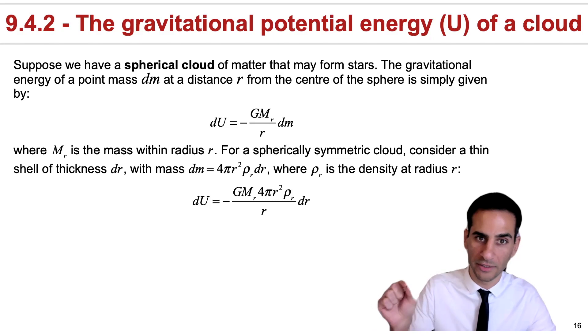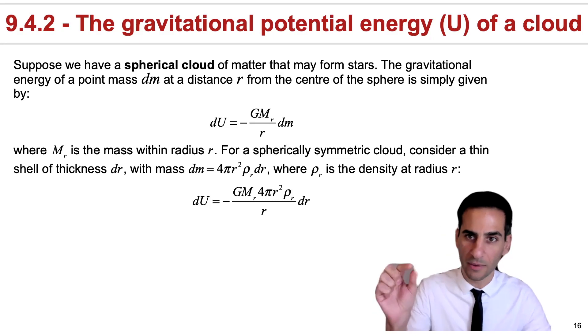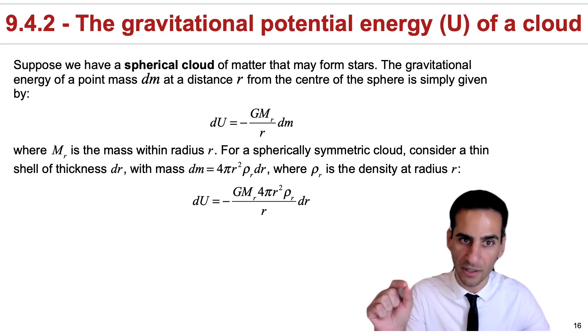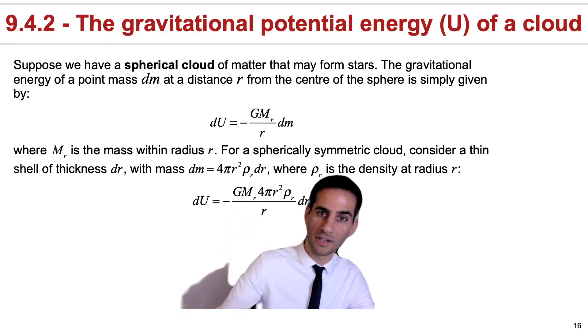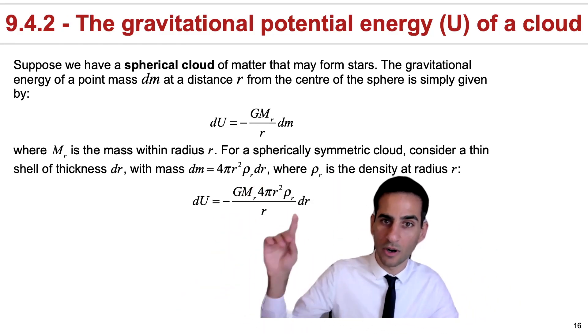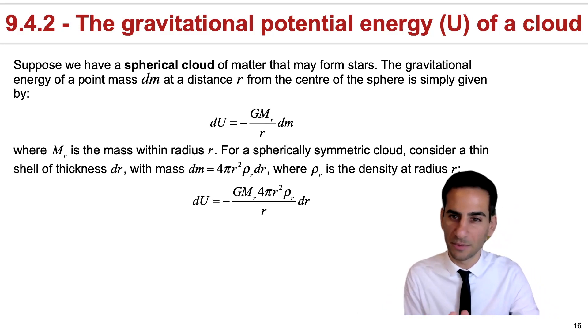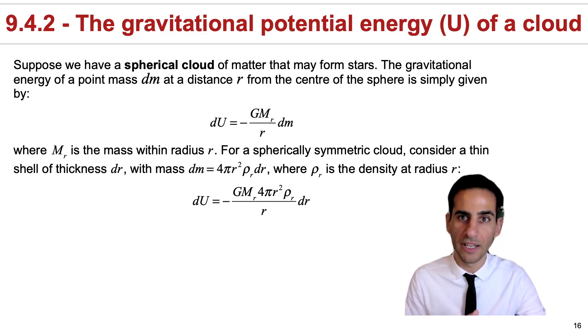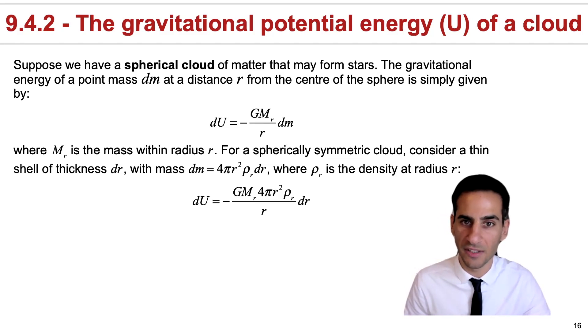If we're considering a spherically symmetric cloud, then we can think about a thin shell of thickness dr. If we do that, then we can write that this mass dm is essentially given by 4πr² ρ_r dr, where the density ρ_r is just the density at that specific radius. So far, we have not made any assumption of how the density may be varying, but you'll see that we'll make a simple assumption just to make the problem easy to solve. And in Physics 264, if you do it, you will discuss this in more detail and also look at cases where density may be varying.